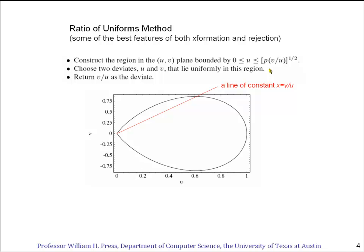So what do we do? You pick two deviates, u and v, that lie uniformly within the teardrop, and then you return v divided by u as the deviate. That's why it's called the ratio of uniforms method. How do you pick uniformly within the teardrop? Well, the easiest way is, once again, a rejection method. You pick u and v uniformly in this rectangle, and then you reject if it's outside the teardrop and return the value v/u if it's inside the teardrop.